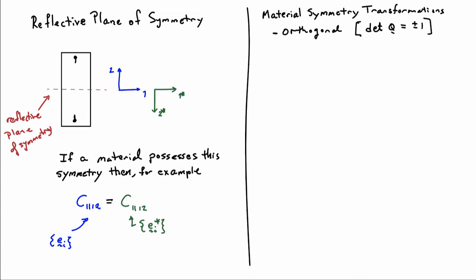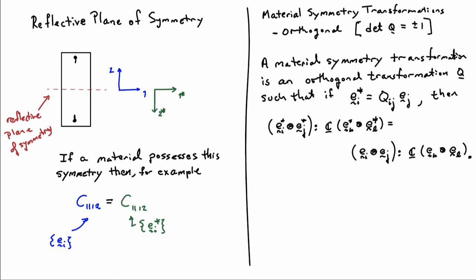To set this more formally: material symmetry transformations are orthogonal transformations, and they can be proper orthogonal — determinant plus 1 (rotations) — or improper orthogonal — determinant minus 1 (also called improper rotations or reflections). A material symmetry transformation is formally defined to be an orthogonal transformation Q such that, if I define a star basis in terms of my original basis, then components computed in the star basis are equal to components computed in the original basis. The Qij are computed in the original basis.